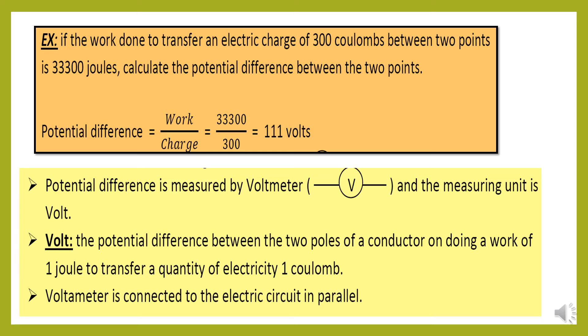The potential difference equals work over charge, 33,300 over 300. Don't forget measuring unit, volts.